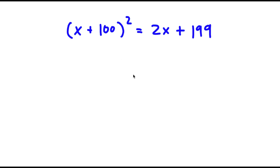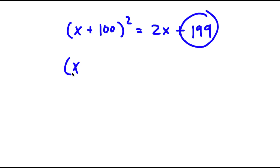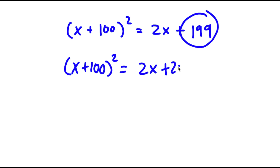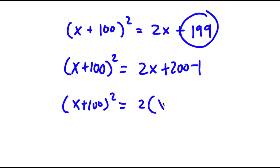In this problem, I have x plus 100, squared, is equal to 2x plus 199. To solve this, I'm going to start by rewriting 199 as 200 minus 1. So now I have x plus 100, squared, is equal to 2x plus 200 minus 1.